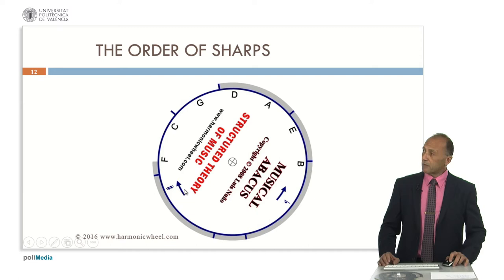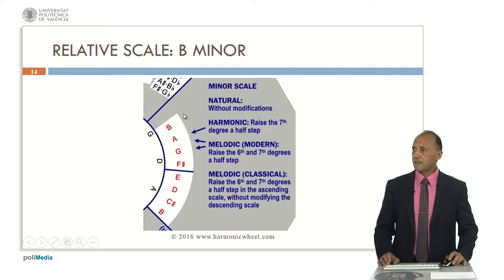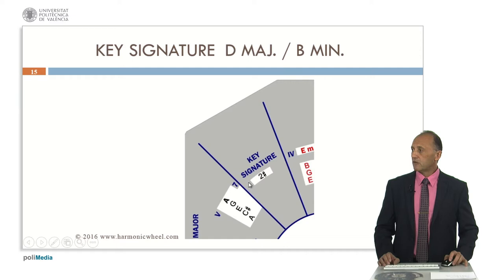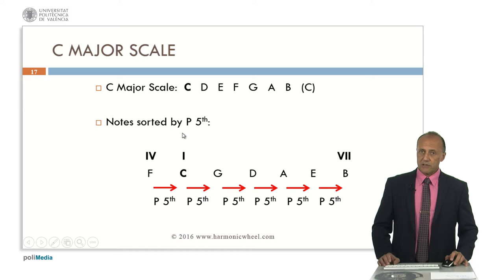In the center area of the musical abacus, if we are in the C major or A minor keys, we find the order of sharps here: F, C, G, D, A, E, B. If we consider another major scale, for example D major, as well as its relative minor, B minor, in this case we have two sharps, which are F and C, as we can see at the center area of the musical abacus.